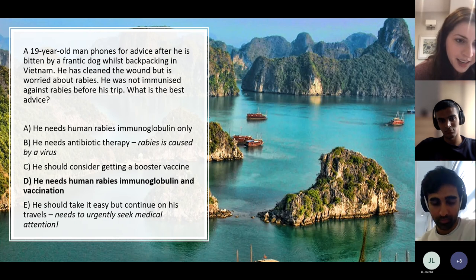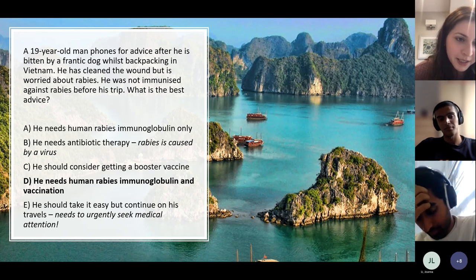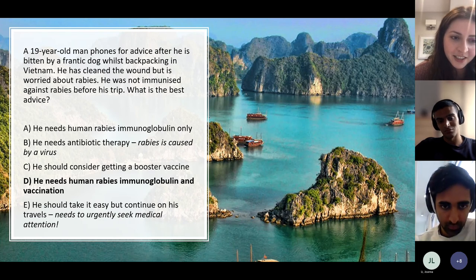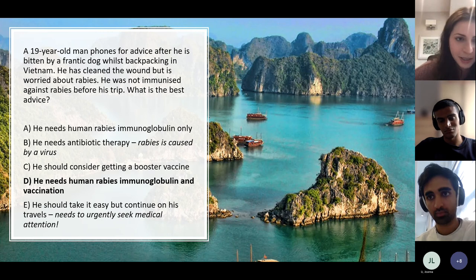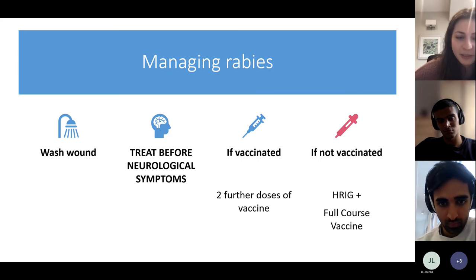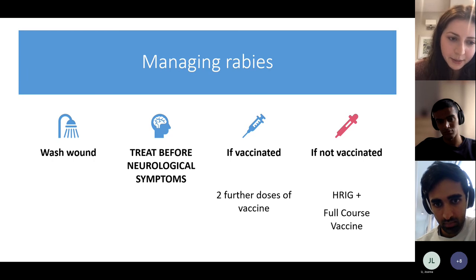Rabies management: wash the wound first. If the person is already vaccinated, give two further doses of vaccine. If unvaccinated — as in this SBA — give human rabies immunoglobulin plus a full course of vaccine (approximately three doses). Antibiotics are not needed since rabies is viral. Urgent medical attention is essential before neurological symptoms develop.